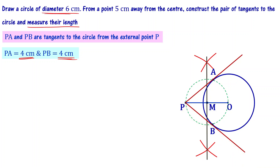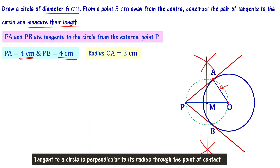The radius of the circle is 3 centimeters. We know a theorem that says a tangent to a circle is perpendicular to its radius through the point of contact. So tangent PA and radius OA are perpendicular to each other at point of contact A, giving angle OAP equal to 90 degrees.